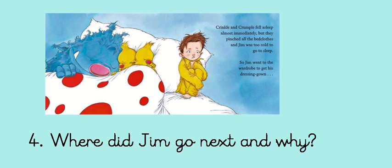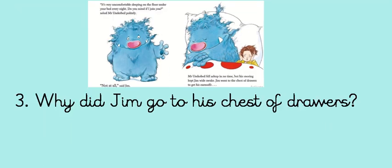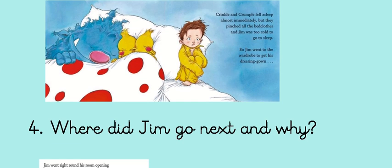Here we go. Question 4, this part of the writing. Where did Jim go next, and why? So first, he went to his chest of drawers. And then he went somewhere else. And what was he going to get?